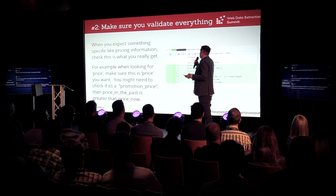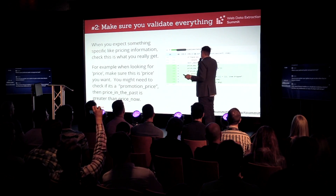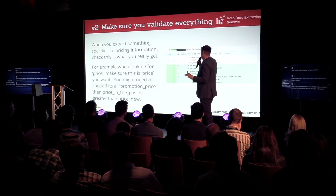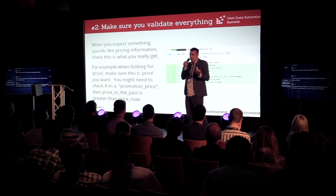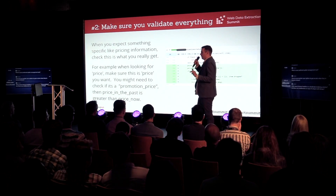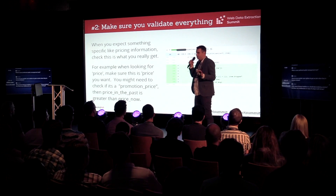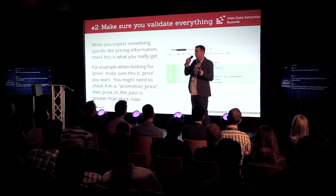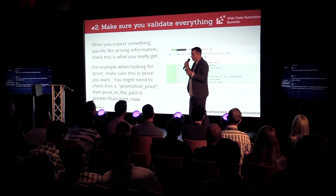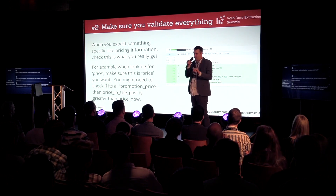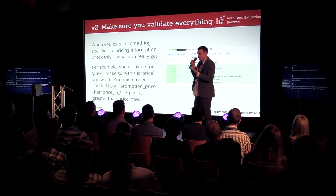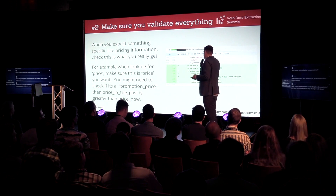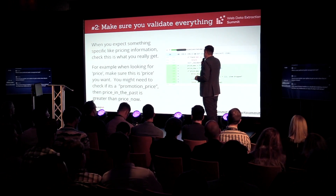The other rule is: make really sure you validate everything. When you expect something specific, like price information, do not assume it's going to be a number. If you're looking for some offerings or promotions, there are all sorts of unusual things that can happen. For example, you might assume that if there is a promotion with a past price and current price, the past price should be higher, right? But that's not what happens. Sometimes you find cases where a store says something was cheaper in the past but now it's more expensive — because of some design bug. So it's important to really validate all the data you have.